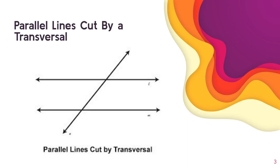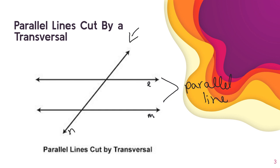First things first, if we have parallel lines cut by a transversal — so this is line L and this is line N, those are parallel lines. The line that cuts through those lines is called the transversal. So we have parallel lines that are cut by a transversal, which is just the line that is going through the parallel lines.